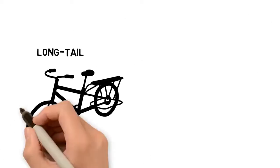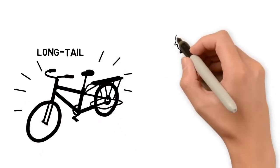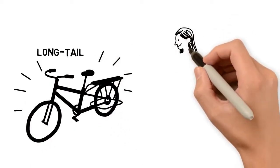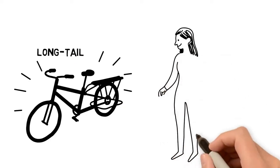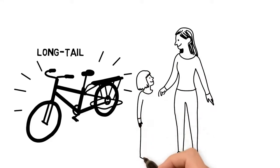Then I discovered my solution, the long tail. I wanted to be able to carry my two children plus groceries. My kids had complained about feeling too cramped in a trailer and I was afraid it would be the same problem on a trike or front loader.